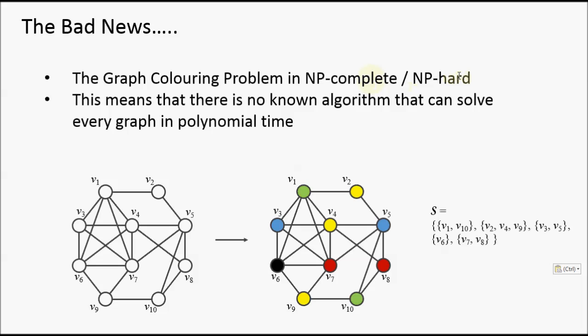What this means is, if I was to produce an algorithm that solved this problem, this algorithm's runtime requirements would grow at an exponential rate compared to the size of the graph. So if I was to have a graph of 100 vertices for example, I might be able to solve that in a few minutes.